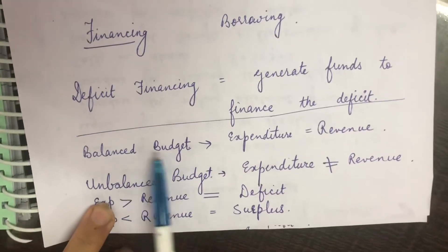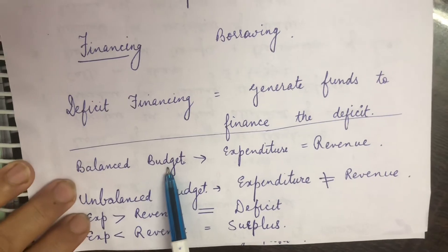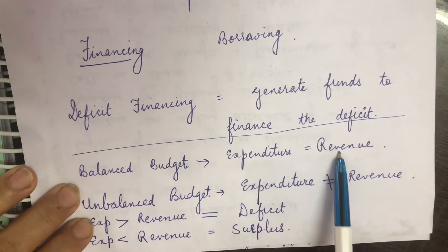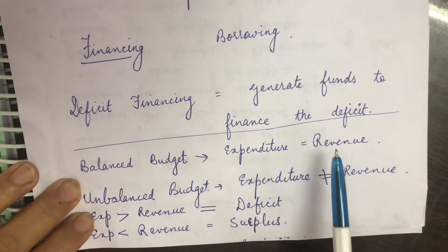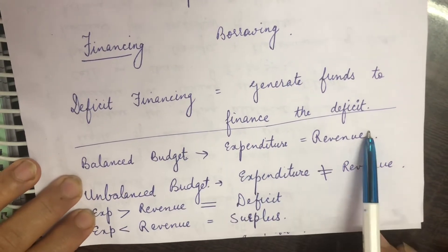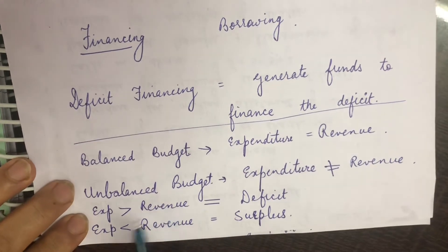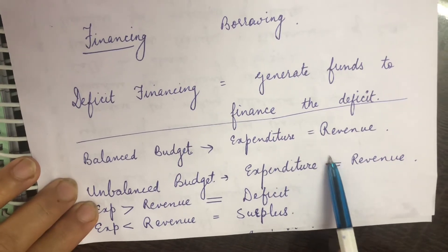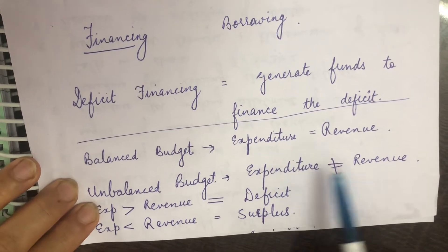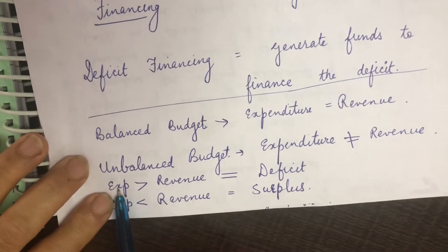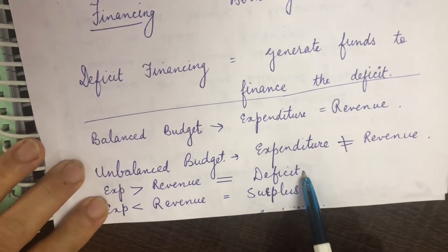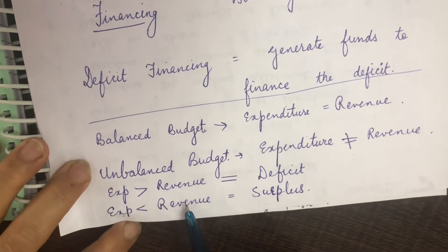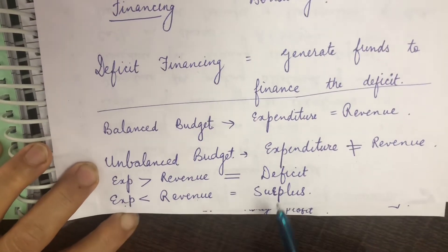Now we discuss the balanced budget. A balanced budget occurs when expenditure is equal to revenue — for example, expenditure of 21,000 crore and income of 21,000 crore. That is a balanced budget with no tension. Tension arises with an unbalanced budget, when expenditure is not equal to revenue. When expenditure is more, as we explained, that is a deficit. When expenditure is less and revenue is more, income is more and spending is less, that is a surplus.